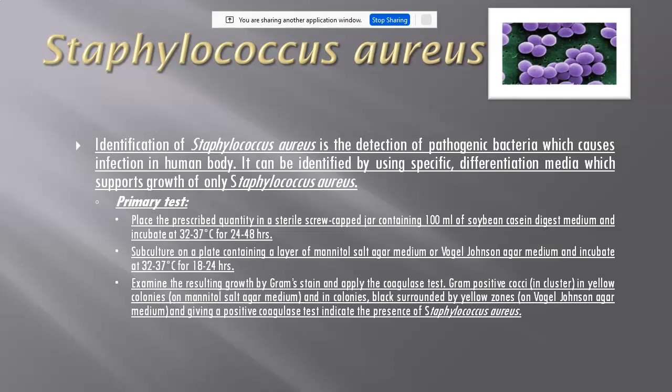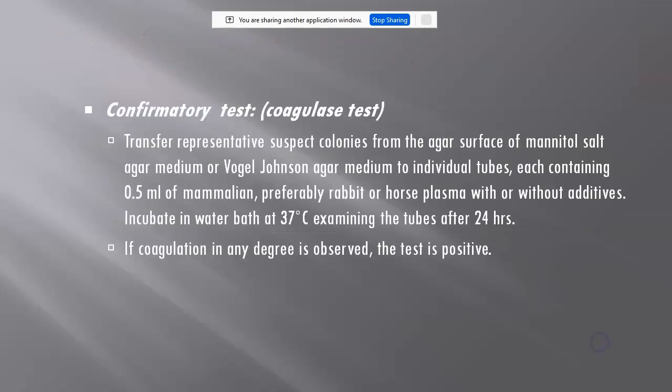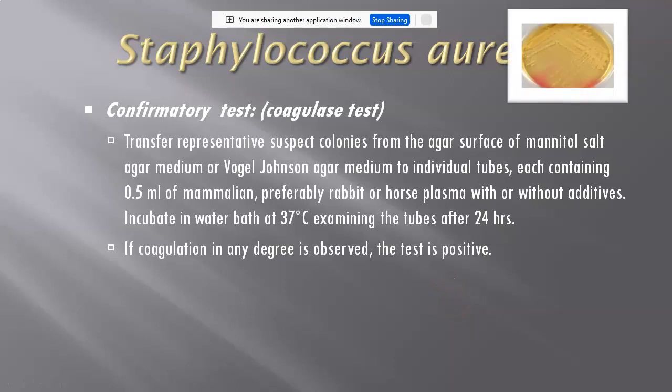When Gram-positive cocci in cluster form are observed under the microscope and typical colonies appear on Vogel-Johnson's medium or mannitol salt agar, this indicates the pharmaceutical product is contaminated with Staphylococci. To confirm this, you have to perform the confirmatory test.